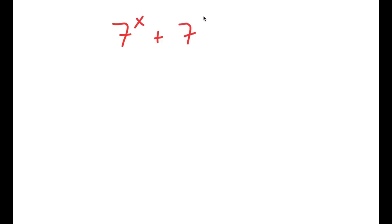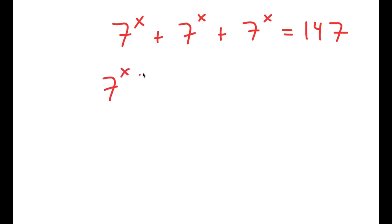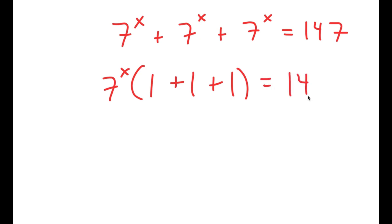In this video, I'm going to solve the equation 7 to the power of x plus 7 to the power of x plus 7 to the power of x is equal to 147. To start, I'm going to factor out 7 to the power of x. So I get 7 to the power of x times 1 plus 1 plus 1 is equal to 147.